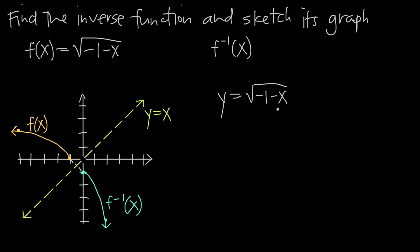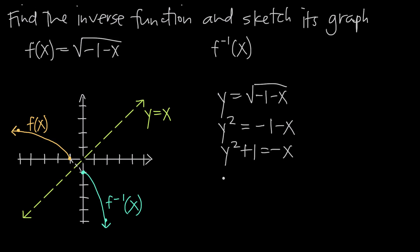Next, we solve this equation for x. To do that, we square both sides: y squared equals negative 1 minus x. Then we add 1 to both sides to get y squared plus 1 equals negative x. Finally, we multiply both sides by negative 1, giving us x equals negative quantity y squared plus 1.